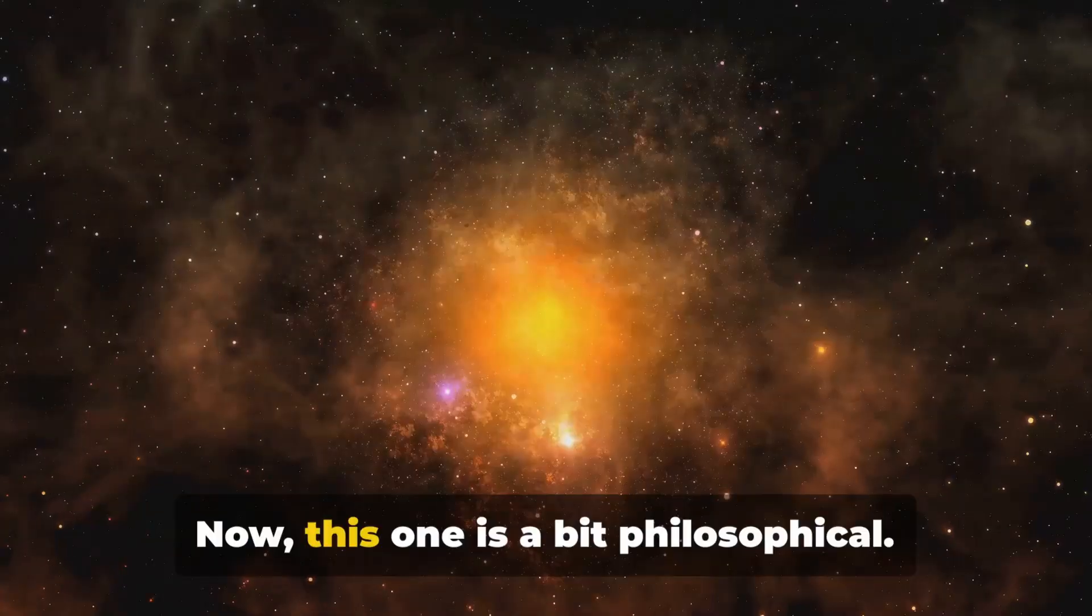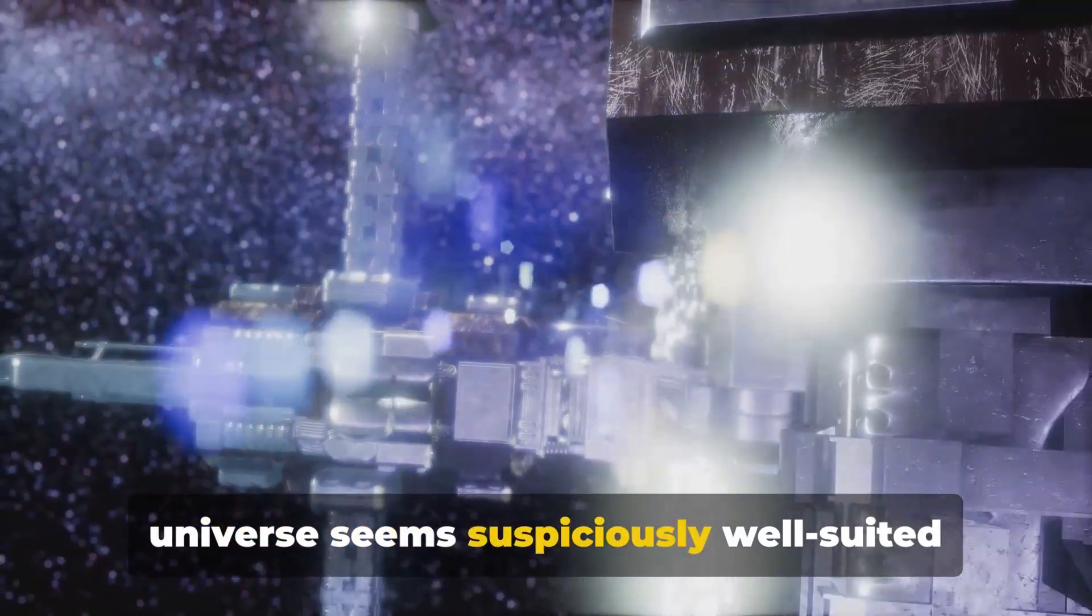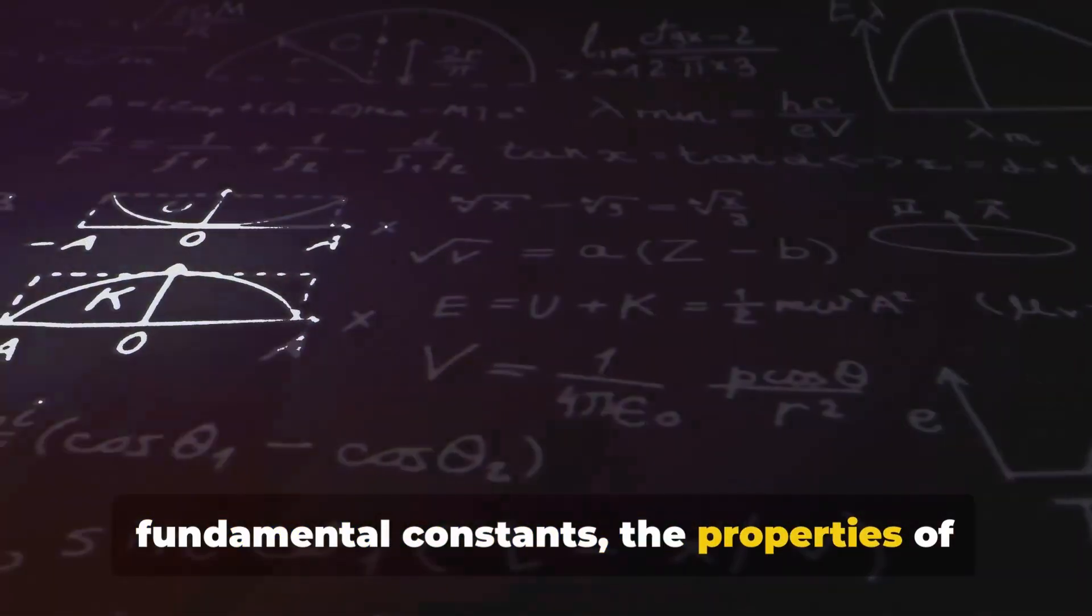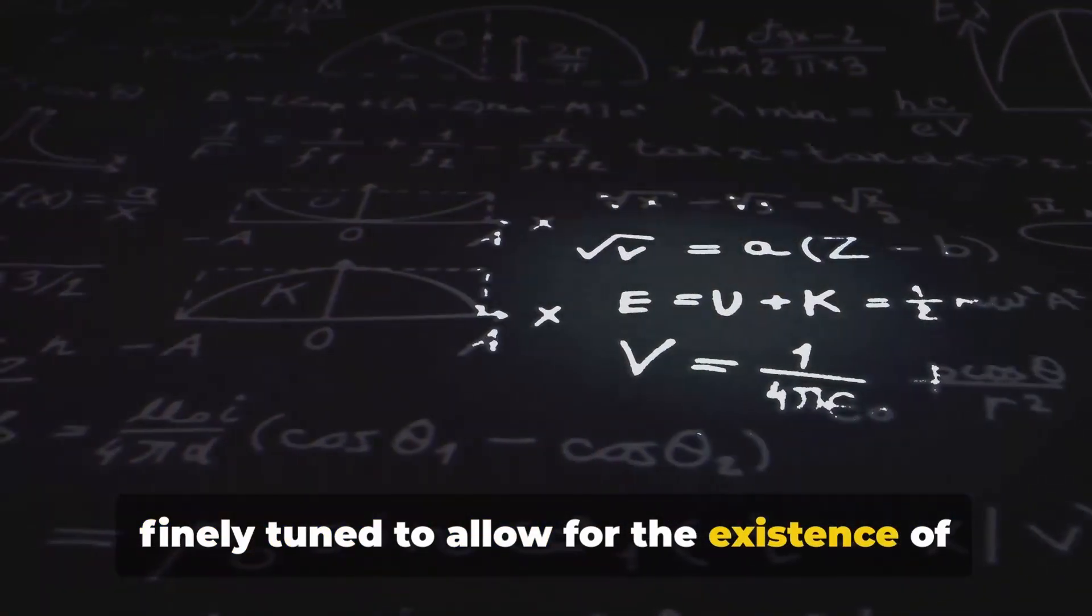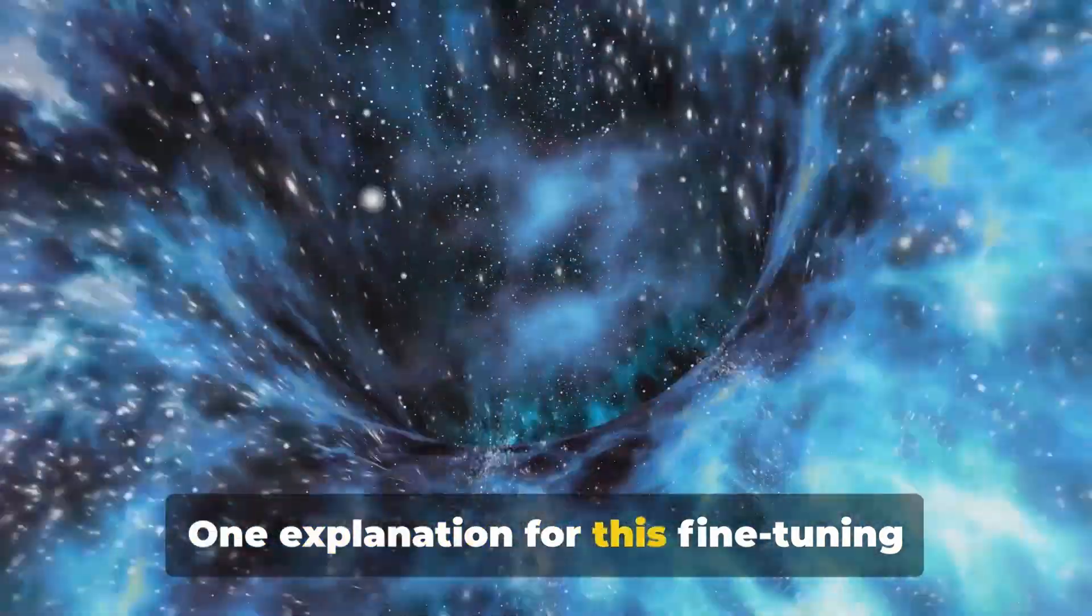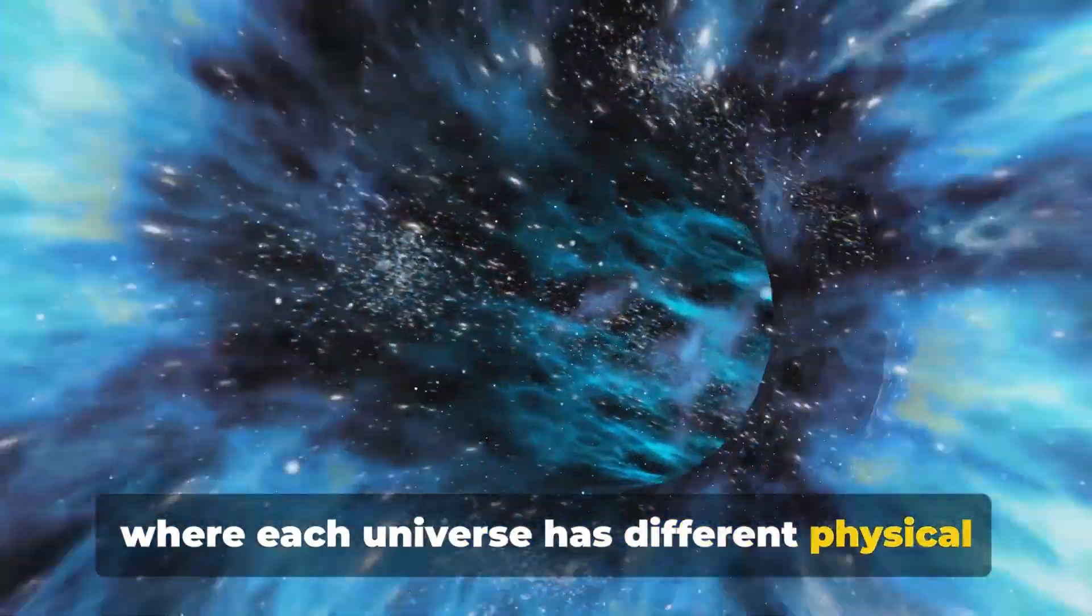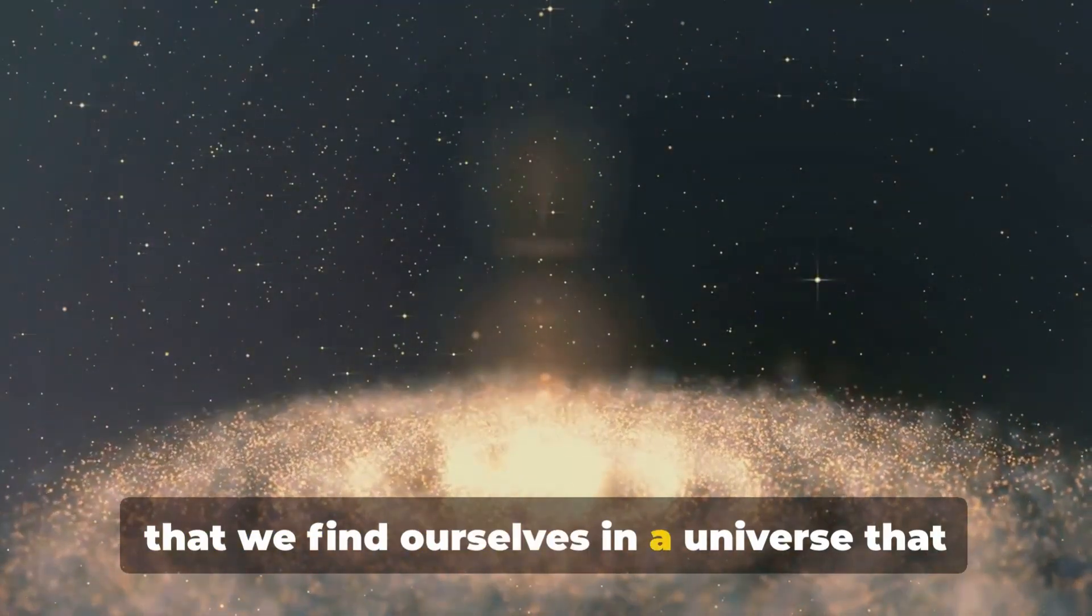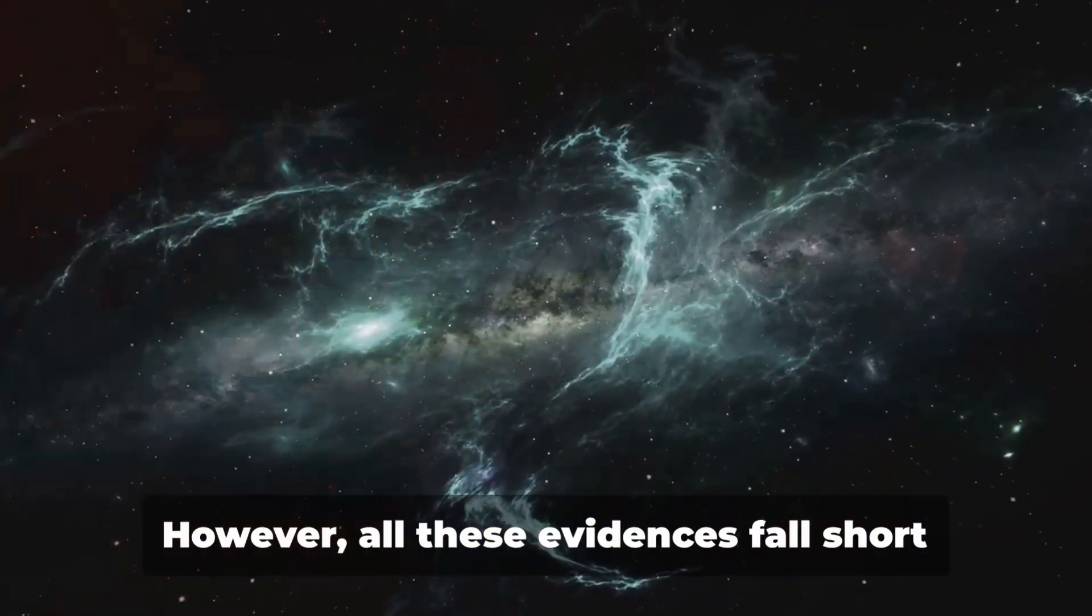Then there's the fine-tuning argument. This one is a bit philosophical. It revolves around the idea that our universe seems suspiciously well-suited for life. The laws of physics, the values of fundamental constants, the properties of elementary particles, all appear to be finely tuned to allow for the existence of stars, galaxies, planets, and ultimately, life. One explanation for this fine-tuning could be the existence of a multiverse, where each universe has different physical laws and constants. In such a scenario, it's not surprising that we find ourselves in a universe that allows for life. After all, we couldn't exist in a universe that didn't.